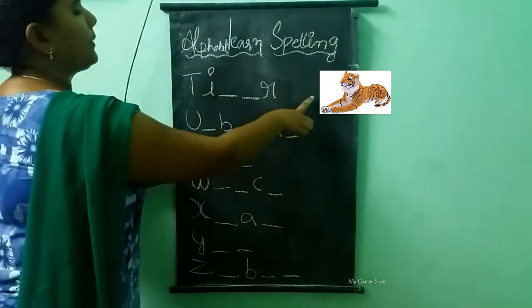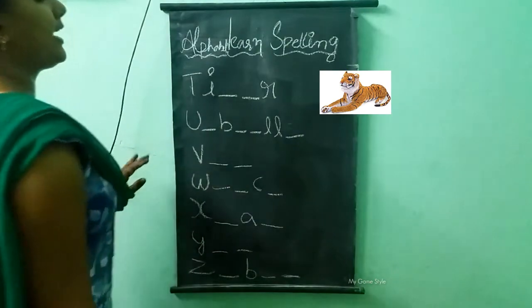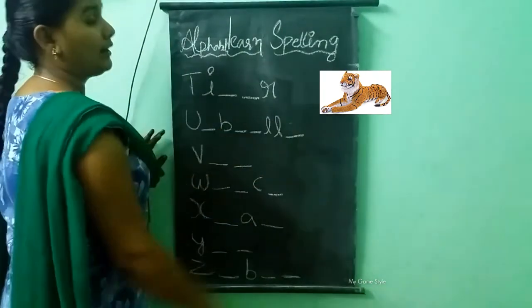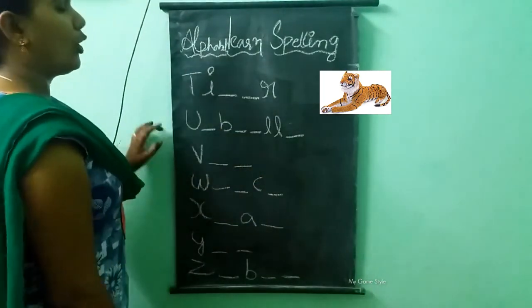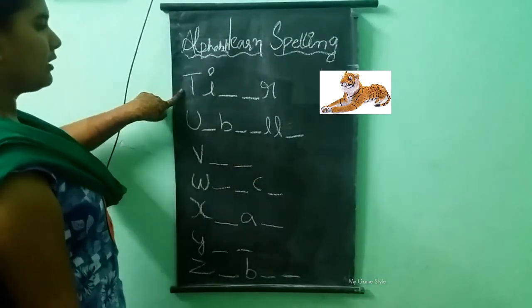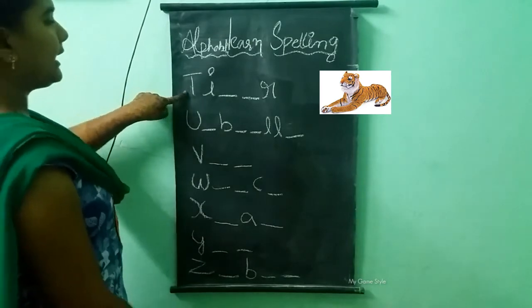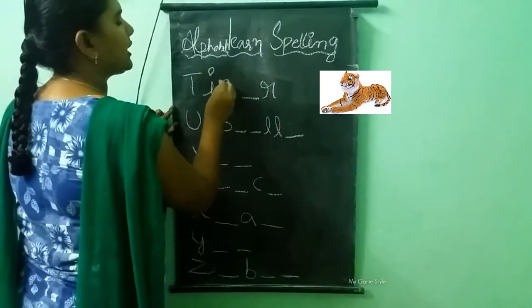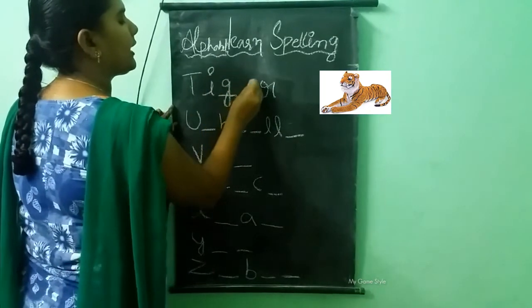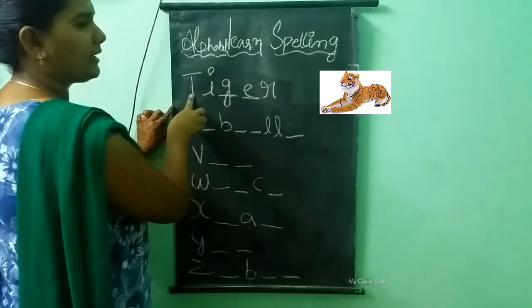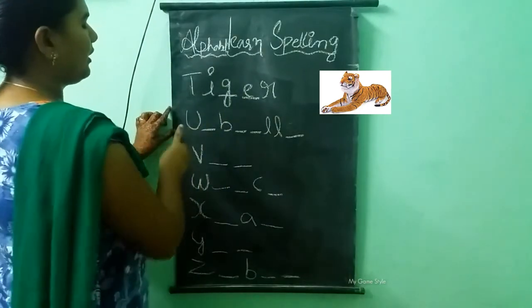What picture is this? This is a tiger. What is the spelling of tiger? T-I-G-E-R. Tiger. Next.